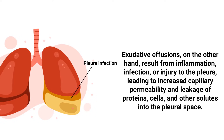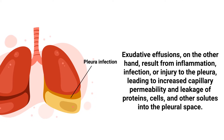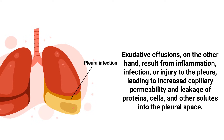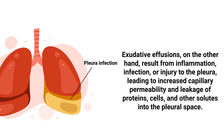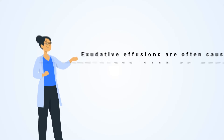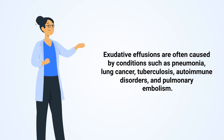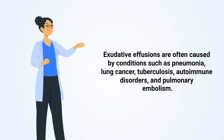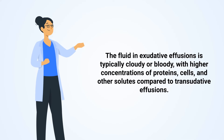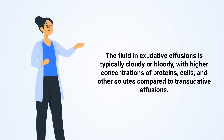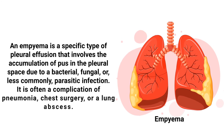Exudative effusions, on the other hand, result from inflammation, infection, or injury to the plural space, leading to increased capillary permeability and leakage of protein, cells, and other solutes. They are often caused by conditions such as pneumonia, lung cancer, tuberculosis, autoimmune disorders, and pulmonary embolism. The fluid in exudative effusions is typically cloudy or bloody, with higher concentrations of protein and cells compared to transidative effusions.